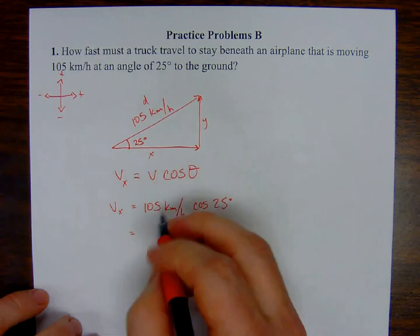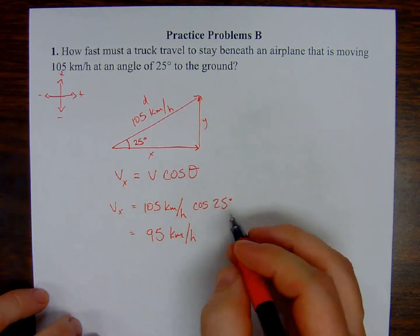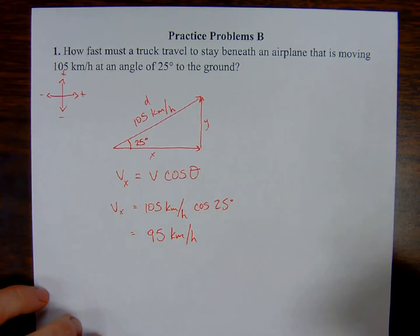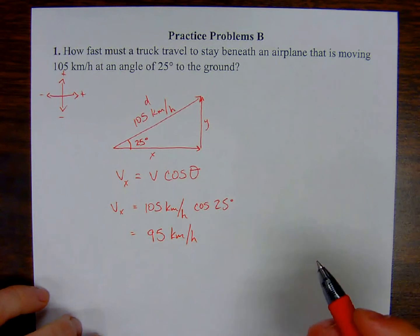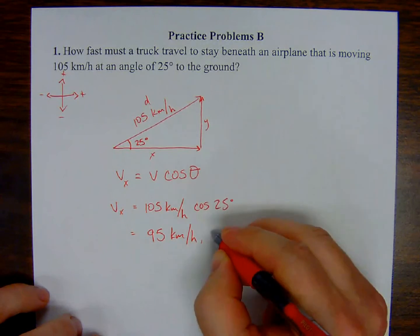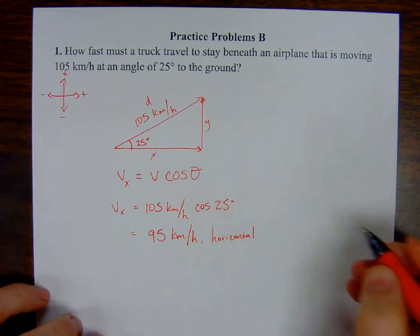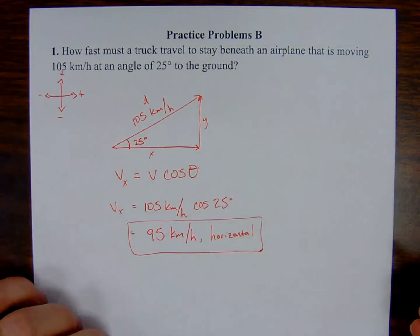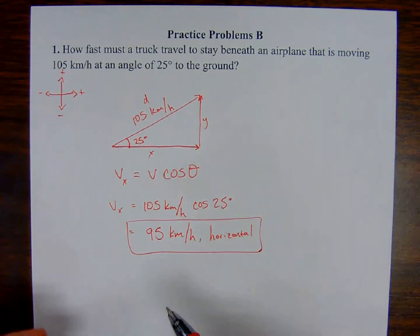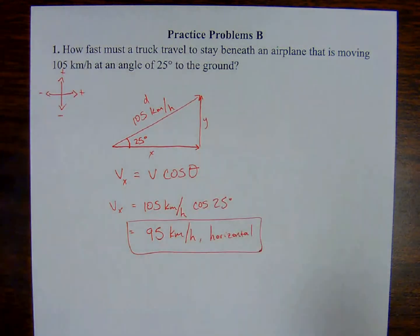Here, I would suggest that you be safe and include a direction. Here, you don't really need to because we're asking specifically for the horizontal component. So it's in the question, but just in general, you don't want to leave it up to the teacher's preference. You want to simply provide the information. Anything that you know how to do, show. So the final answer, the output here is 95 kilometers per hour in the horizontal direction.